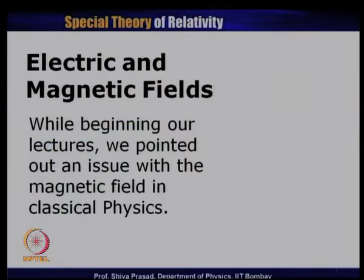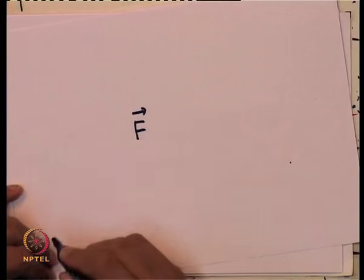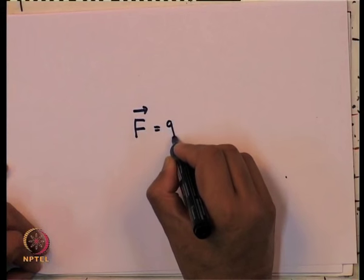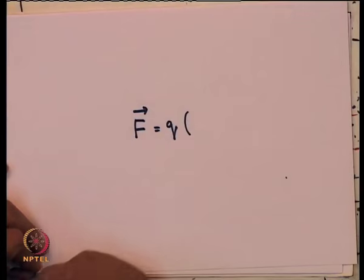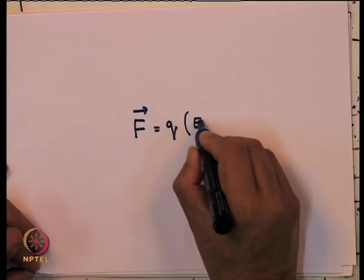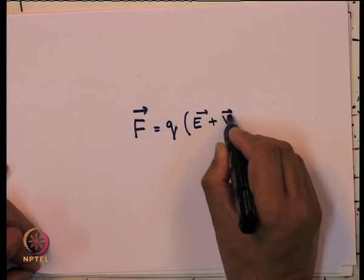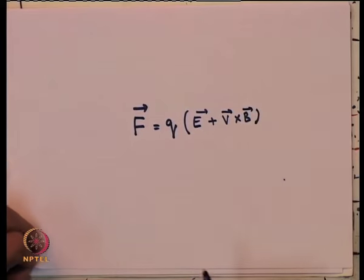If you recall, right in our first lecture, when we were trying to discuss the issues or the problems with classical mechanics, at that time we had mentioned about the Lorentz force. We pointed out an issue with the magnetic field in classical physics. The force on a particle with charge q is given by F = q(E + v × B), where v is the speed of the particle in a given frame of reference.